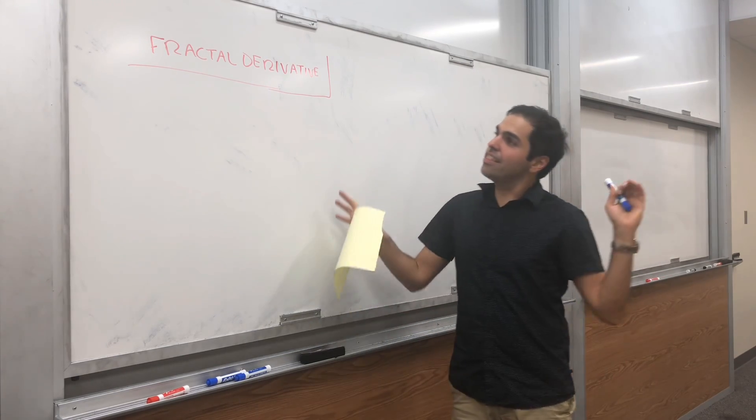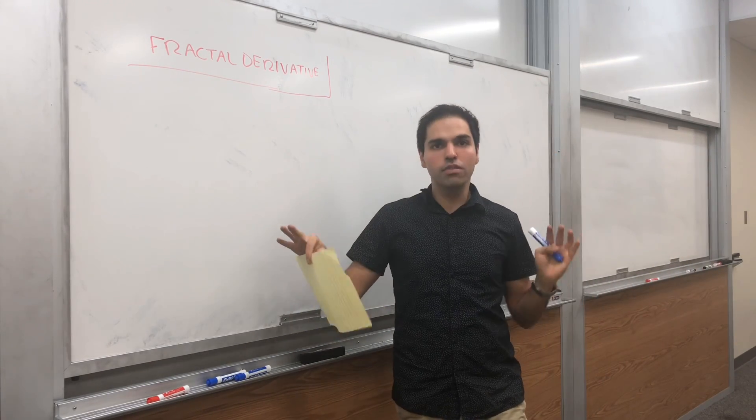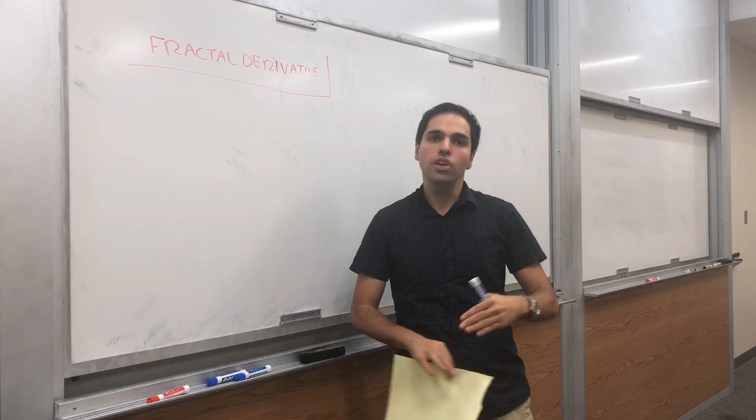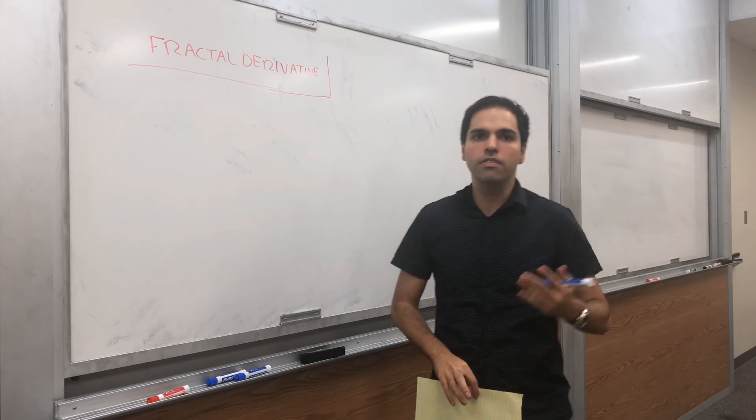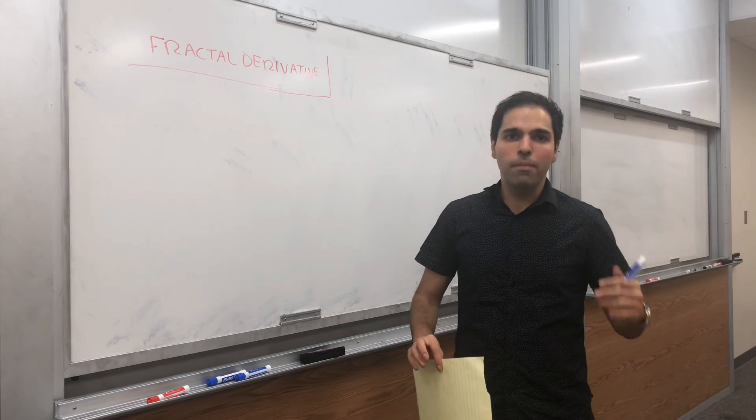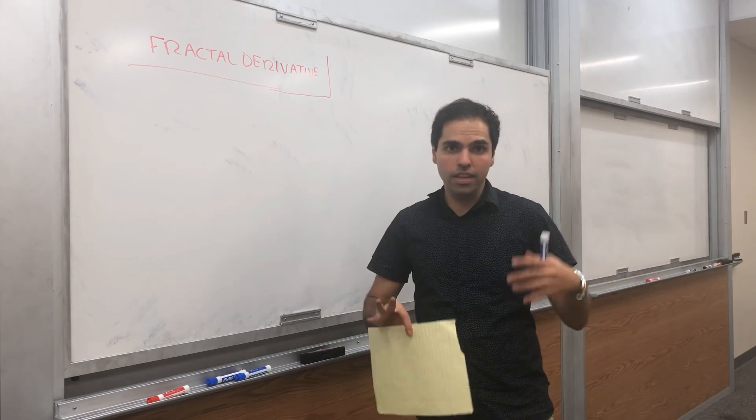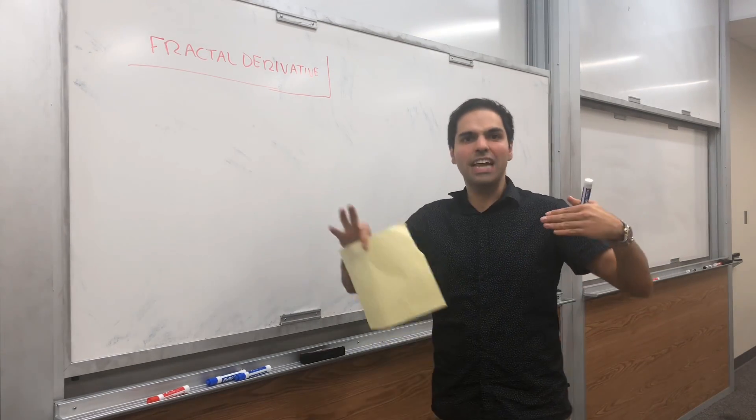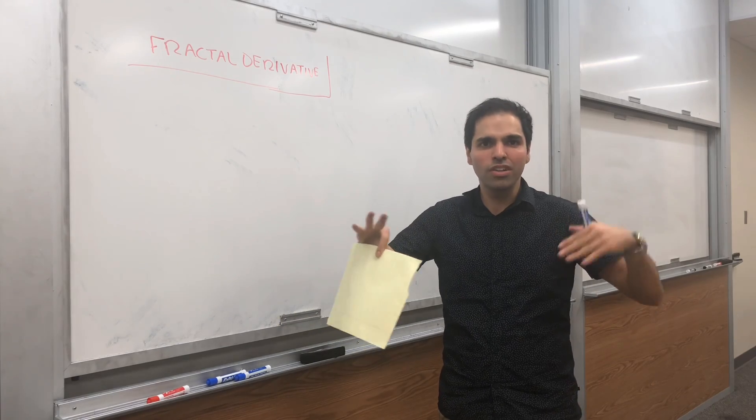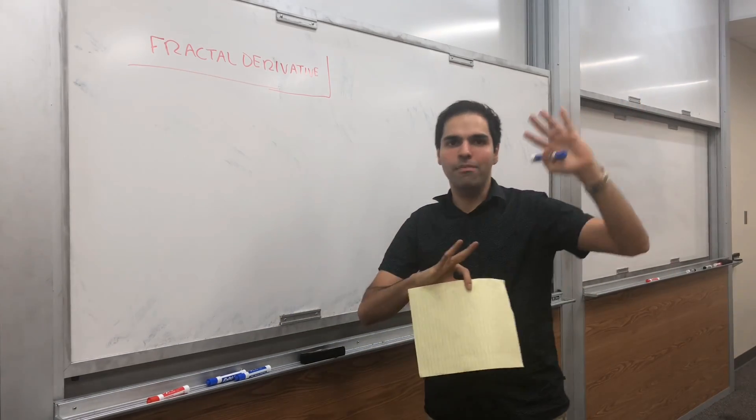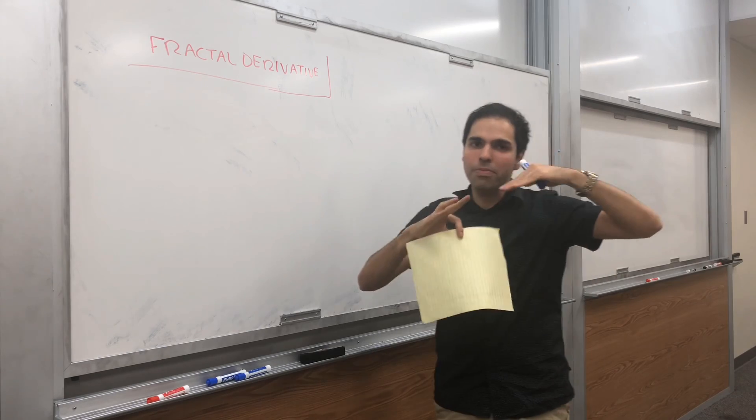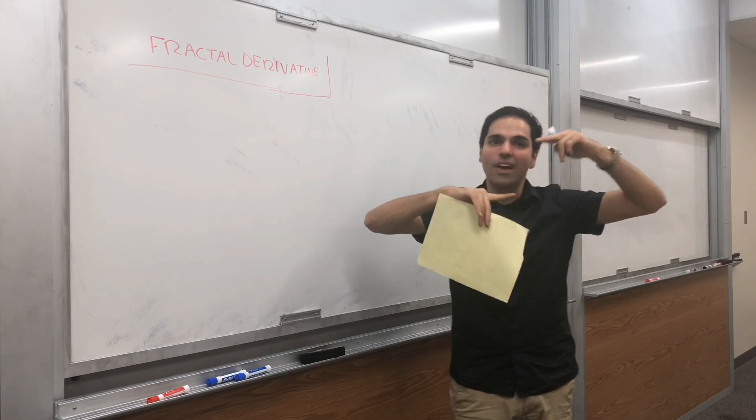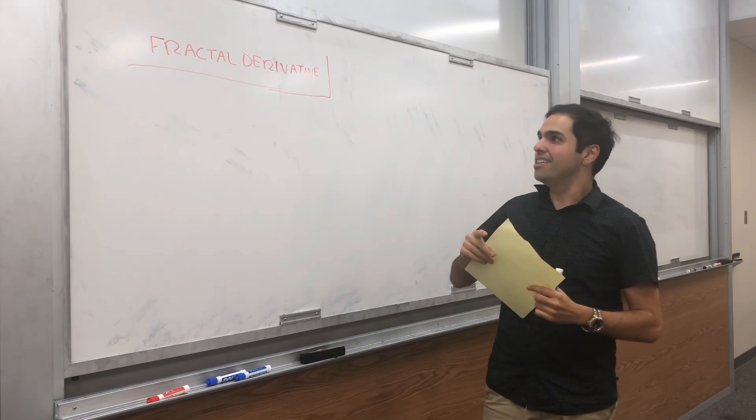The reason it's called fractal derivative is because you're used to integer derivatives, first derivative, second derivatives, but fractals in life, they're not one-dimensional or two-dimensional, they're sort of fractional-dimensional, or they have some dimension, let's say, between zero and one, strictly speaking.